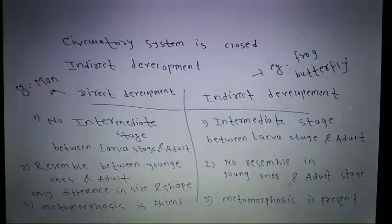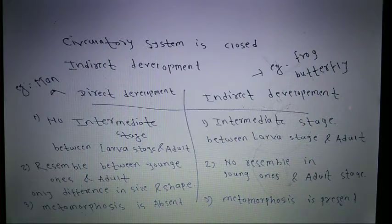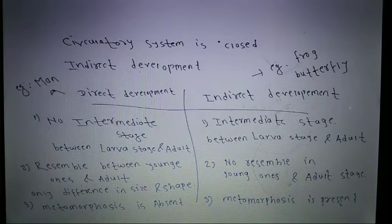The circulatory system in Urochordata is closed, meaning blood vessels for circulation are present.